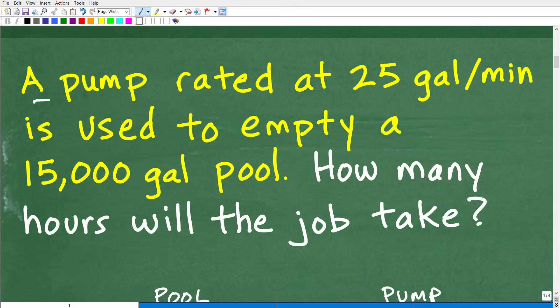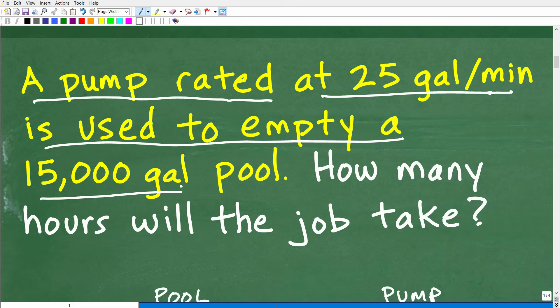A pump rated at, i.e., this pump's ability is, can pump 25 gallons per minute, is used to empty out a 15,000 gallon pool. How many hours will the job take, i.e., how long does this pump need to run, this 25-gallon-per-minute pump need to run to empty out this 15,000-gallon pool?